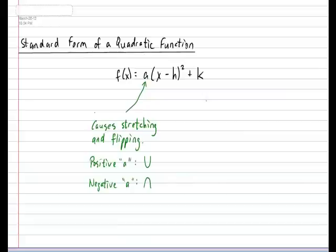In other words, the value of a in the standard form causes stretching and flipping of the parabola. And again, if a was positive it would cause a happy face parabola, and if a was negative it would cause a sad face parabola.